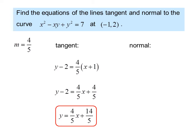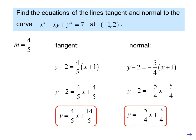Now to find the normal equation, we use the same process, but we need a new slope. Slope is going to be the opposite sign reciprocal of the original slope. So using the point slope equation again, we get y minus 2 equals negative 5 fourths times the quantity x plus 1. We eliminate the parentheses and solve for y. So there's our normal equation.